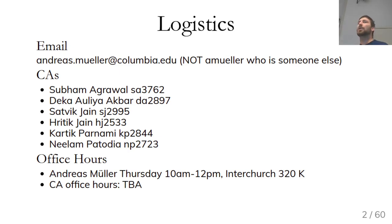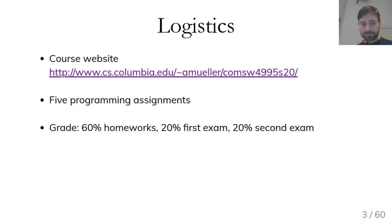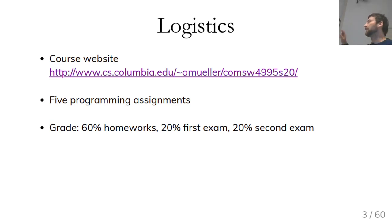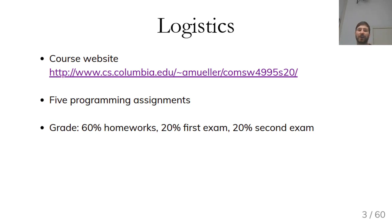If you audit the class, your homework will not be graded and you can't sit in on exams. The course website will have all the slides, video recordings, and homework. There will be five assignments worth 60% of the total grade, and two exams each worth 20%. All homework will be programming assignments submitted through Gradescope — at least four will be done in Jupyter Notebooks.